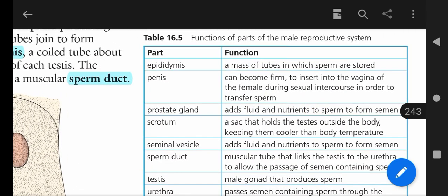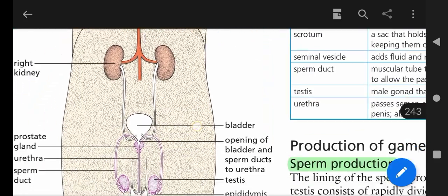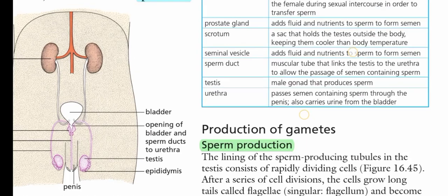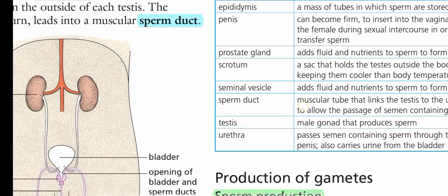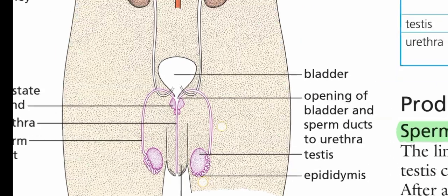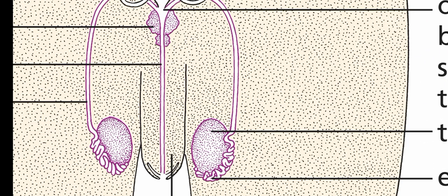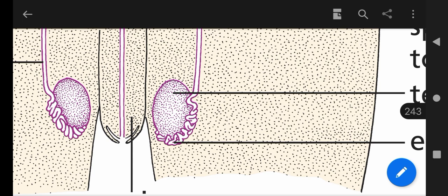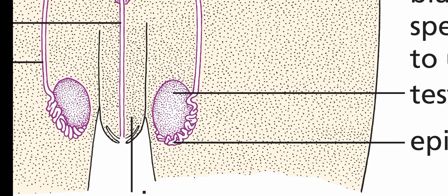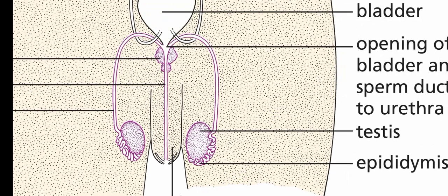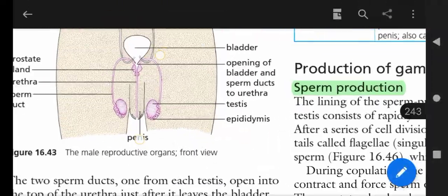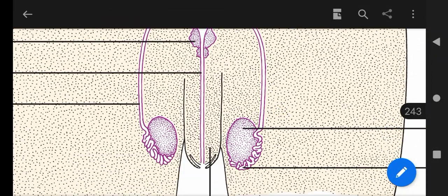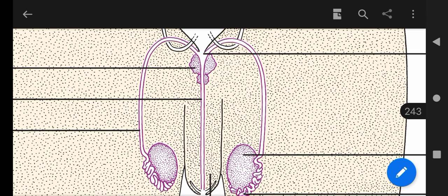Now let's look at the table of parts and their functions. The epididymis is a tube present on each testis, and its function is the storage of sperms — the testis forms more sperms than immediately needed, and the extra sperms are stored in the epididymis. The function of the testis is the formation of sperms. The sperm duct is the muscular tube that connects the testis with the urethra.